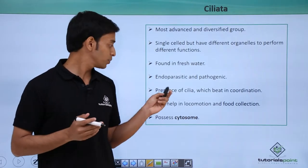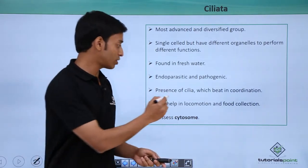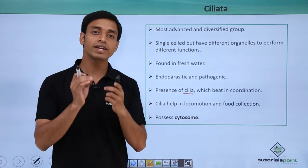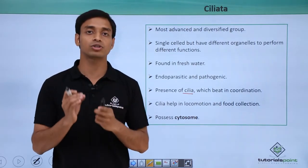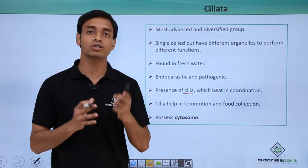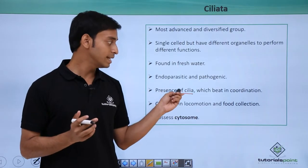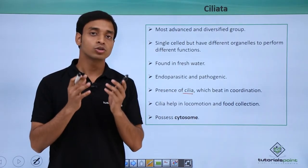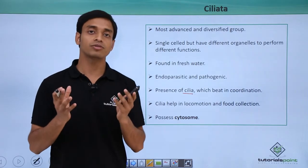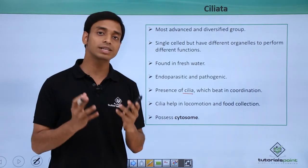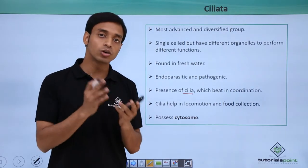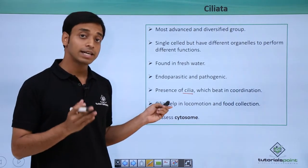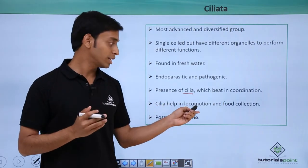They have a presence of a structure known as cilia. Cilia are very small, fine hair-like projections present on the surface of a cell. They have the property of beating in coordination — they have a large number of cilia and all these cilia can beat in coordinated movement with each other.